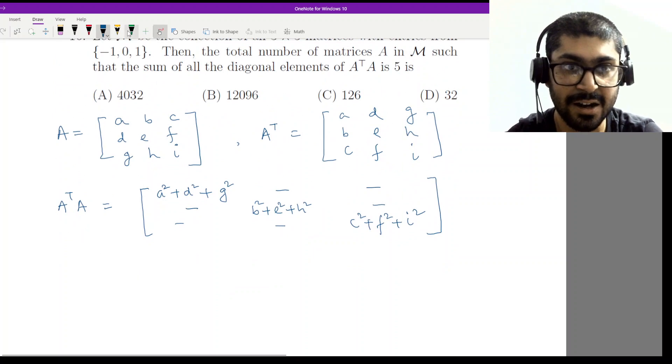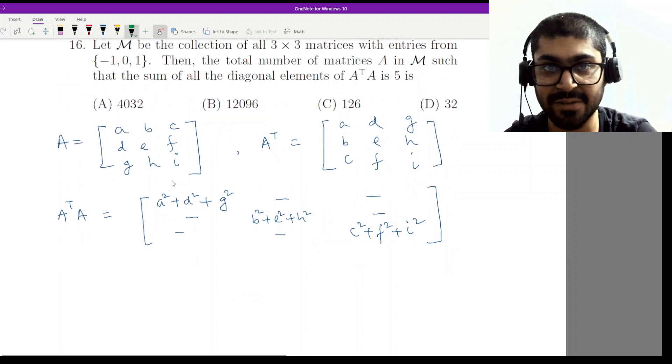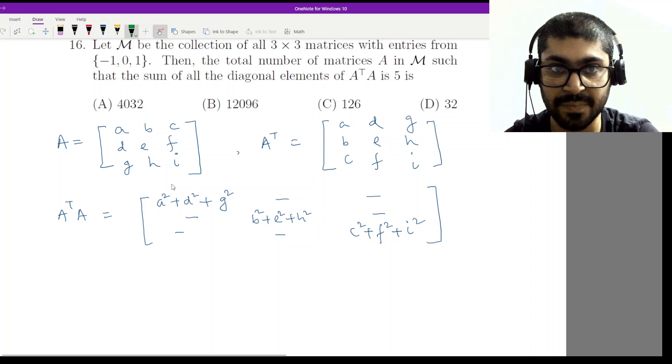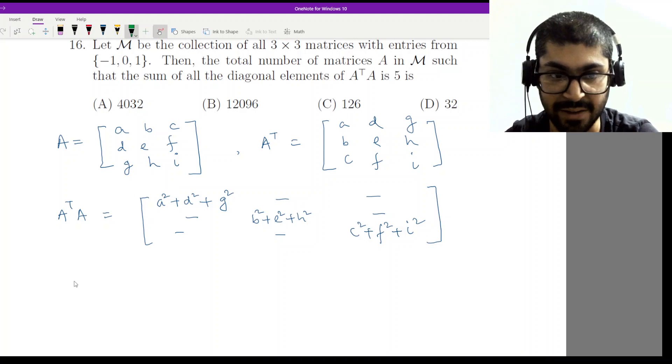What is the condition given? The condition is that the total sum of diagonal elements is five. Therefore, we have a squared plus b squared, all the way to i squared, equal to five.